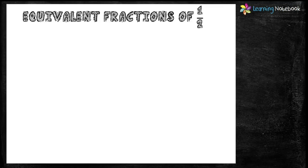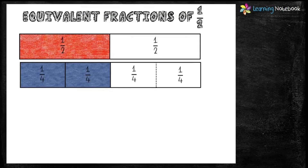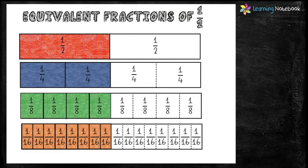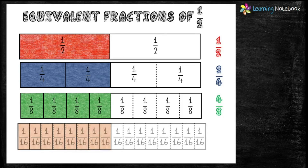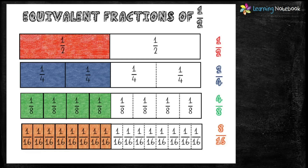Now take the A3 white sheet and write the heading 'Equivalent Fractions of 1 by 2'. Paste all 4 strips one below the other with the help of glue. The colored portion of the first strip represents fraction 1 by 2. The colored portion of the second strip represents fraction 2 by 4. The colored portion of the third strip represents fraction 4 by 8. Similarly, in the fourth strip, the colored portion represents fraction 8 by 16.